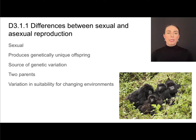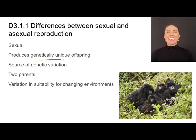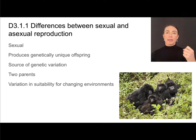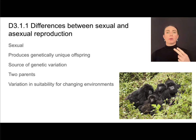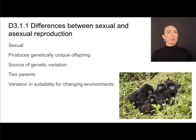Sexually reproducing organisms tend to have longer term success in changing environments due to the variation they get through their reproductive process. In sexual reproduction, we produce genetically unique offspring, which is a big source of genetic variation. It requires two parents, and a lot of variation is produced in the production of gametes — that's meiosis — and in the fertilization process. This is great for changing environments because it provides the possibility that some members of the population have variations needed for survival.